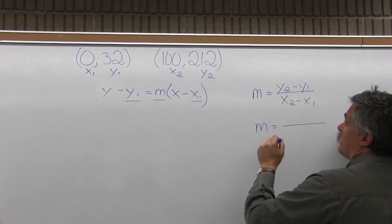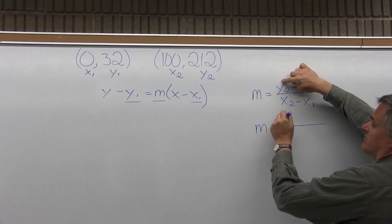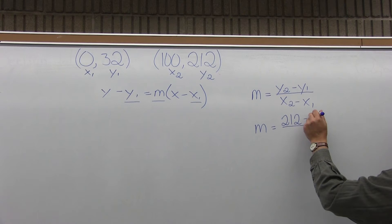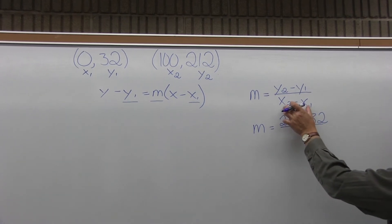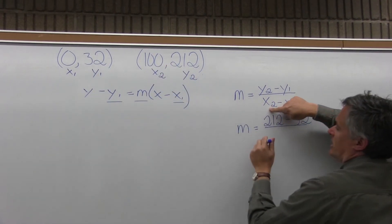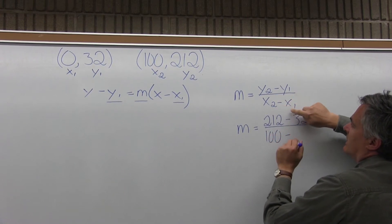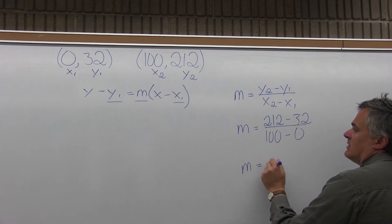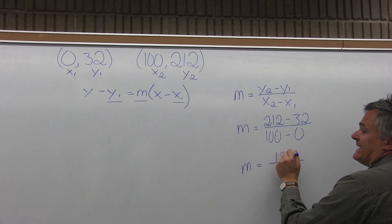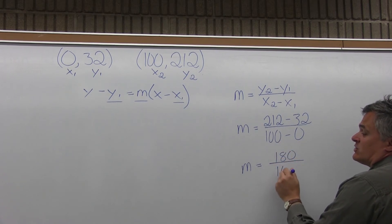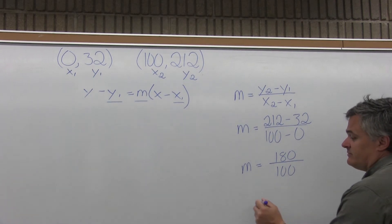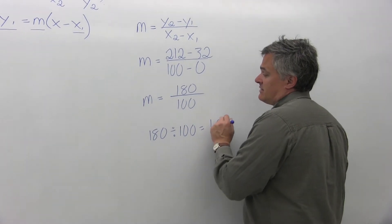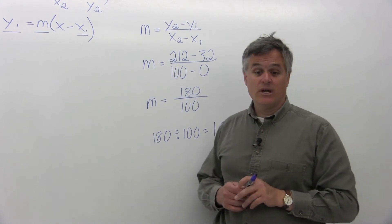The formula for slope is y2 minus y1 over x2 minus x1. Filling that in: m equals, in the numerator, y2 is 212 minus y1 which is 32. In the denominator, x2 is 100 minus x1 which is 0. So m equals 212 minus 32 over 100 minus 0, which is 180 over 100. Dividing that out gives 1.8, or you could write the fractional equivalent, which is 9 fifths.